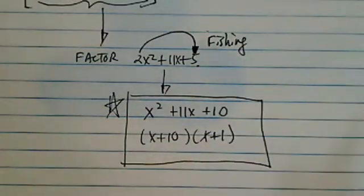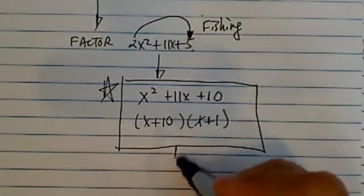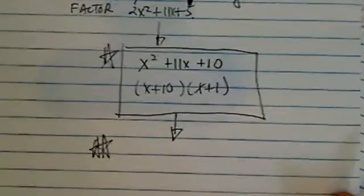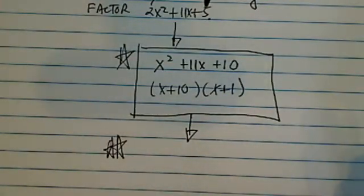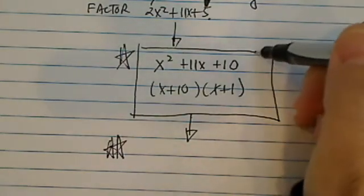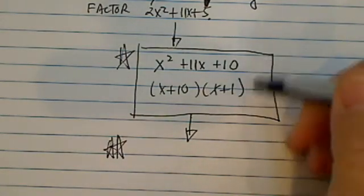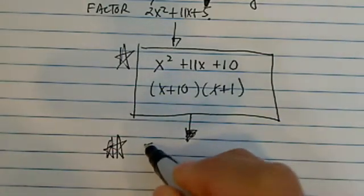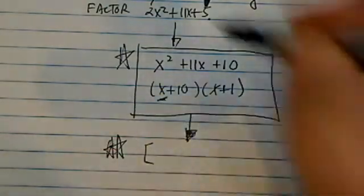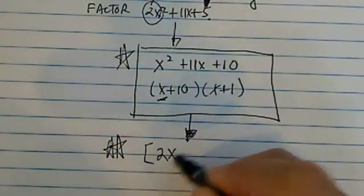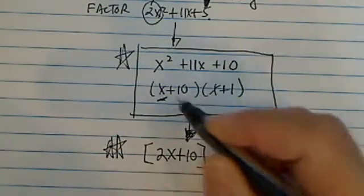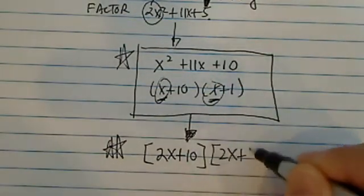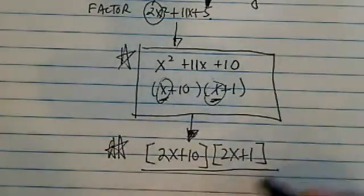It factors as x plus 1 and x plus 10. When it comes out of the box, now this is the second step you need to do — we're basically tricking the system. We know the coefficient is not 1, which makes it difficult, so we draw into the box and factor something close to it. And then when we come out of the box, instead of writing x, I'm going to write whatever I had before. I'm going to write 2x, replacing all the x's. So: 2x plus 10 and 2x plus 1. And then I'm going to divide by 2.